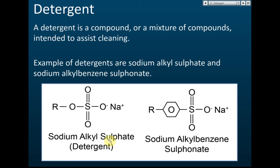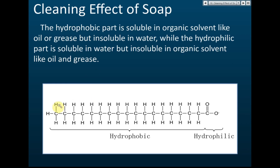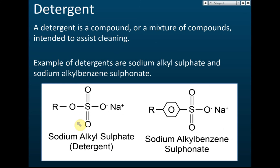First, you must know what 'alkyl' means. Alkyl is a long carbon chain. We have alkyl in soap as well. The hydrophobic part is the alkyl long carbon chain. Because we don't want to draw this long chain again and again, we use the symbol R to represent alkyl. So we have sodium ion and alkyl and sulfate.